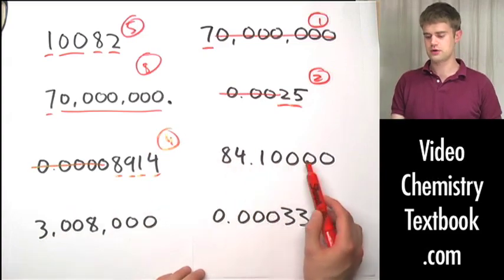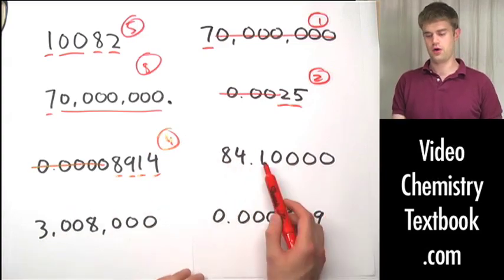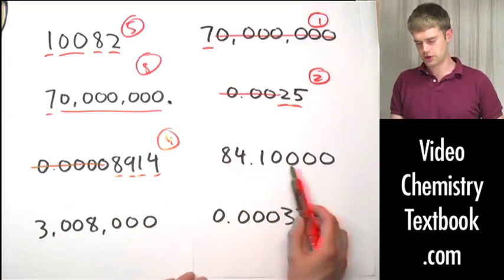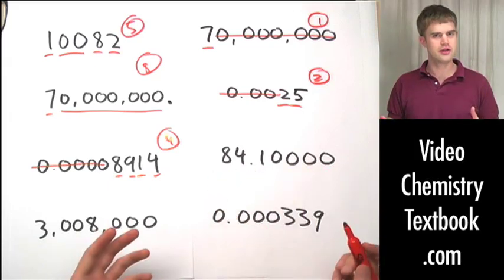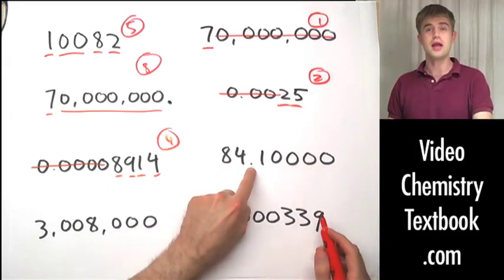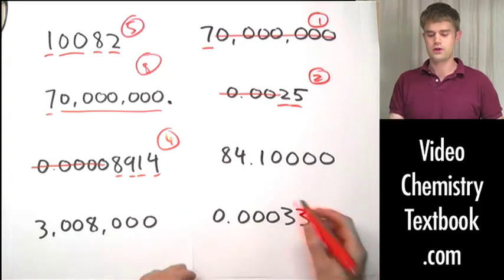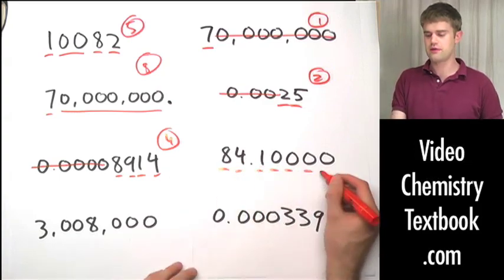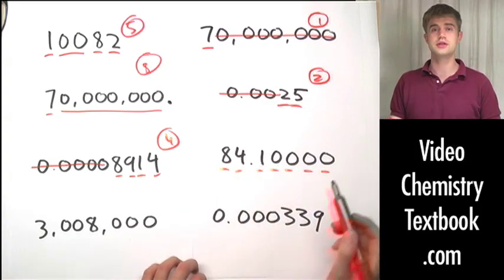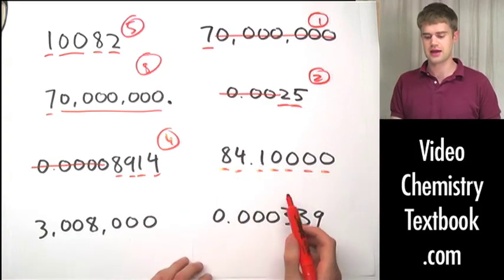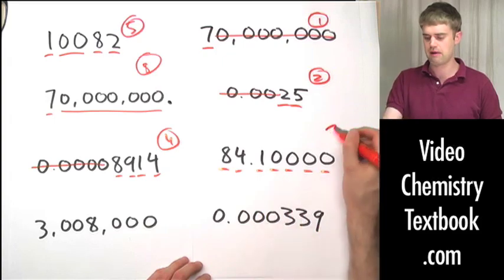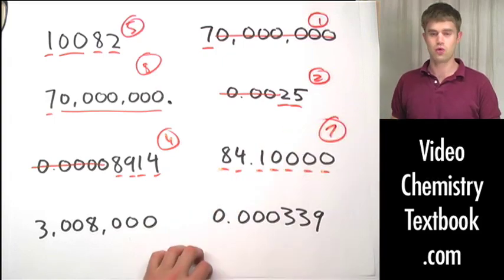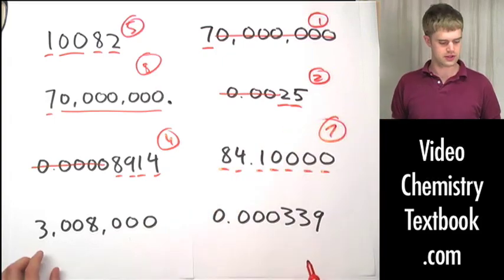84.1000. Zeros coming to the right of non-zero digits — is there a decimal point in the number? There is, which means that every single one of these zeros is significant because of that decimal point. So there are 7 total significant figures here.